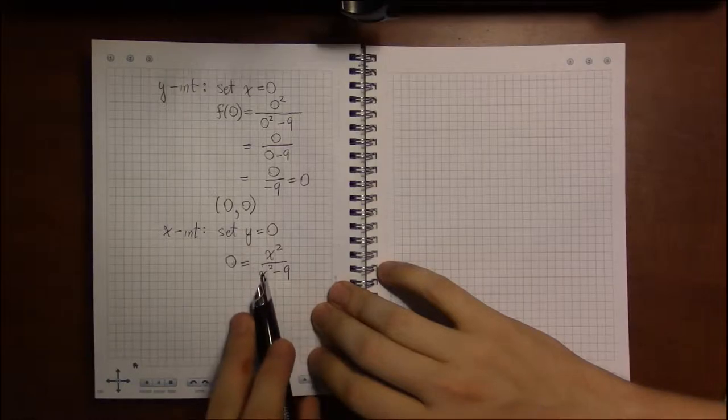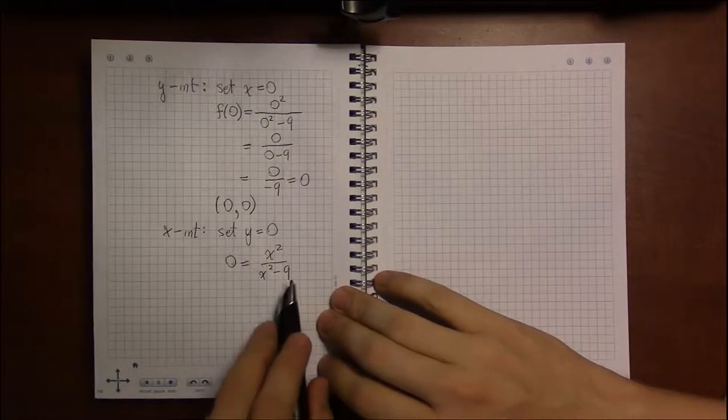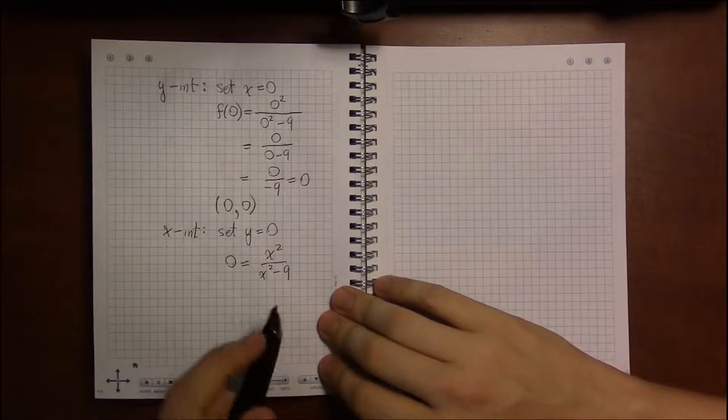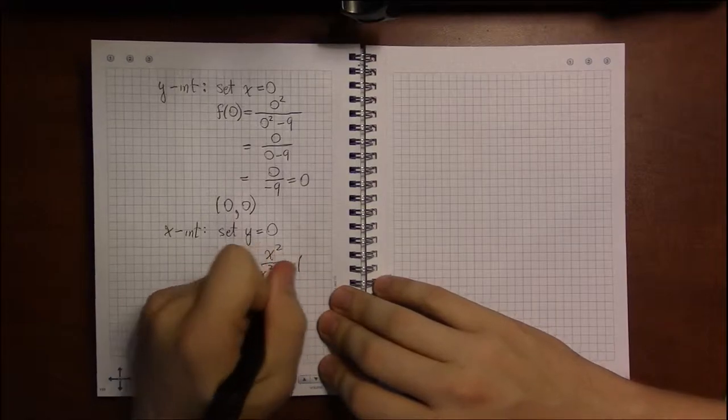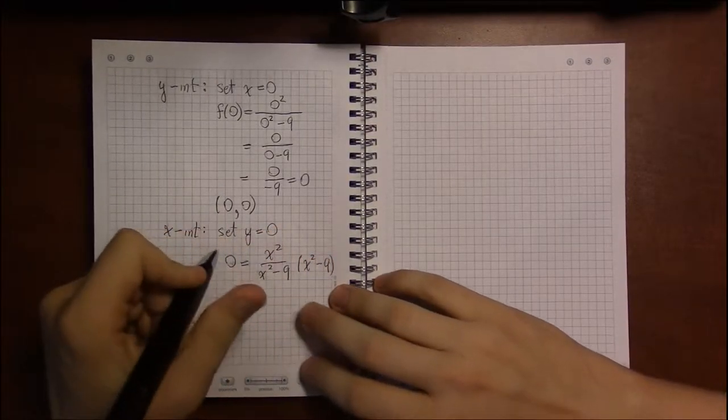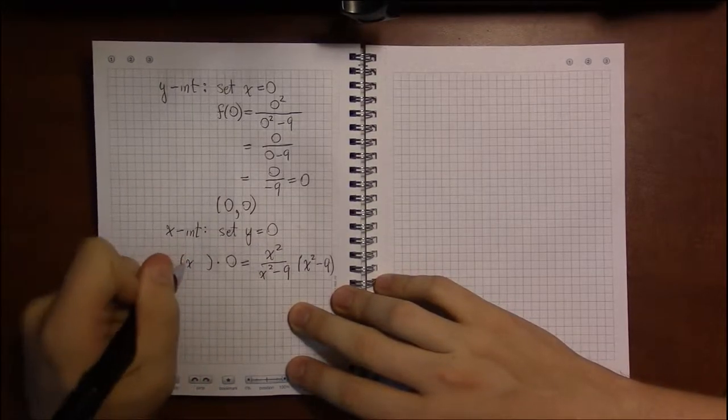Now, if everything is reduced, then all we end up having to do is multiply both sides by the denominator. In this case, that's x squared minus 9. Multiplying by the denominator has the effect of getting rid of the fraction.